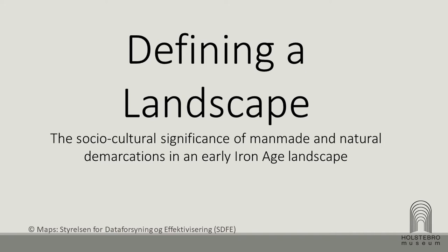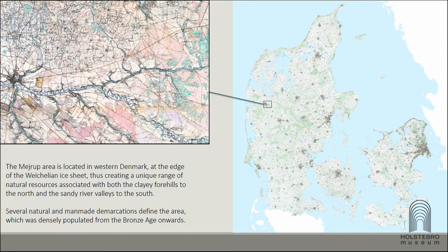I will only touch on this briefly because I don't have so much time. The landscape is here in western Denmark — it's a densely populated landscape around a river called Storå. I'm going to talk about this area east of the small city of Holstebro, and I have limited my presentation today to the early Iron Age. The area has been surveyed extensively in connection with infrastructure and development projects, and right now the museum in Holstebro is working on a larger research project focusing on settlement and land use from the late Neolithic to the beginning of the 20th century. These are just the preliminary results.